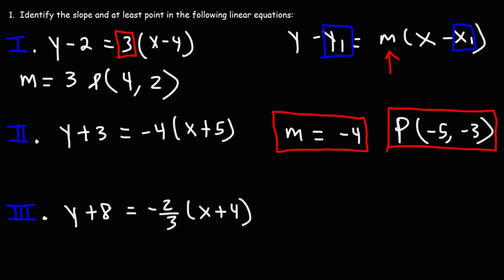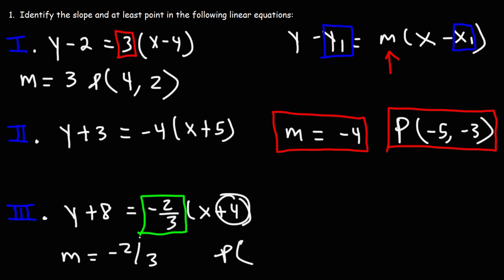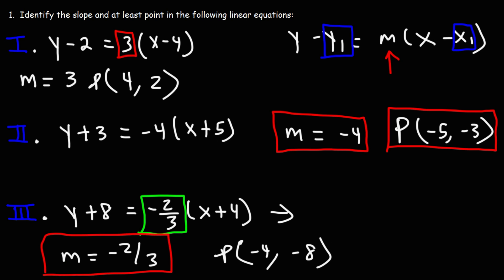So this particular equation has a slope of negative 4, and it passes through the point negative 5, negative 3. Now let's move on to number 3. We have a slope of negative 2 over 3 — the rise is negative 2, the run is 3. This line passes through the point: we see a positive 4, so we change it to negative 4; and for the y value we see plus 8, so we make it negative 8. So this line has a slope of negative 2 over 3 and passes through the point negative 4, negative 8.